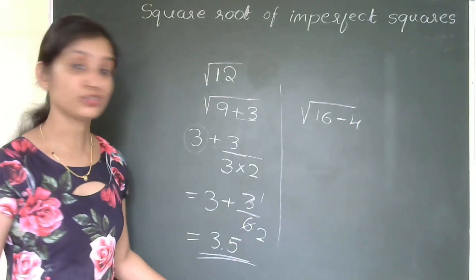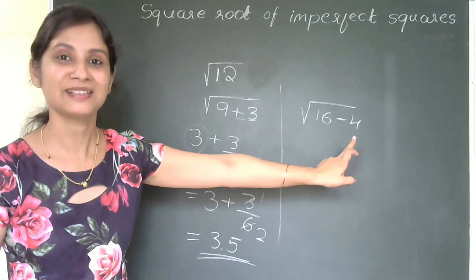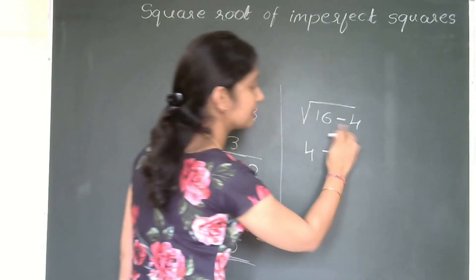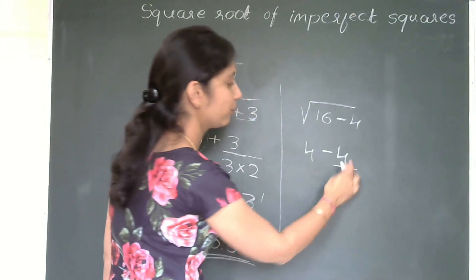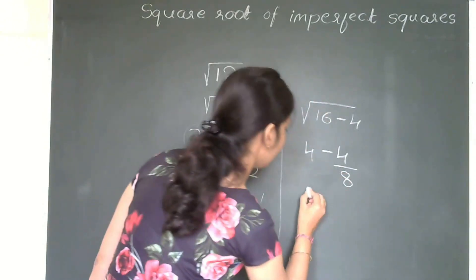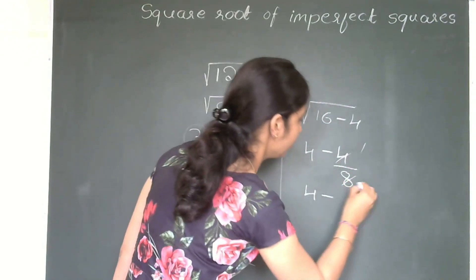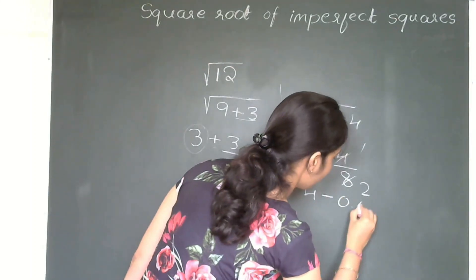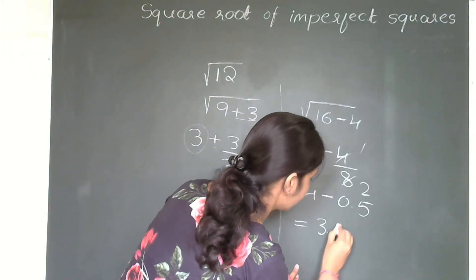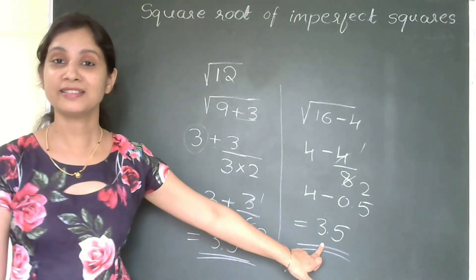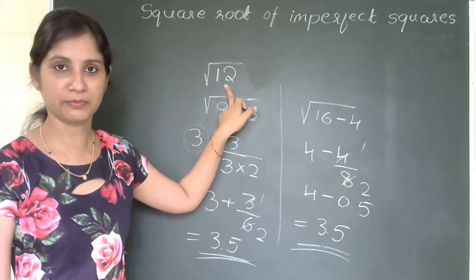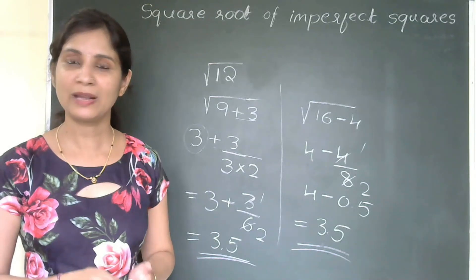Let us verify using 16 minus 4. √16 is 4. Then minus 4 divided by double of 4, which is 8: 4 divided by 8 = 0.5. So 4 minus 0.5 equals 3.5 — the same answer. You can consider any nearest perfect square for the given number.